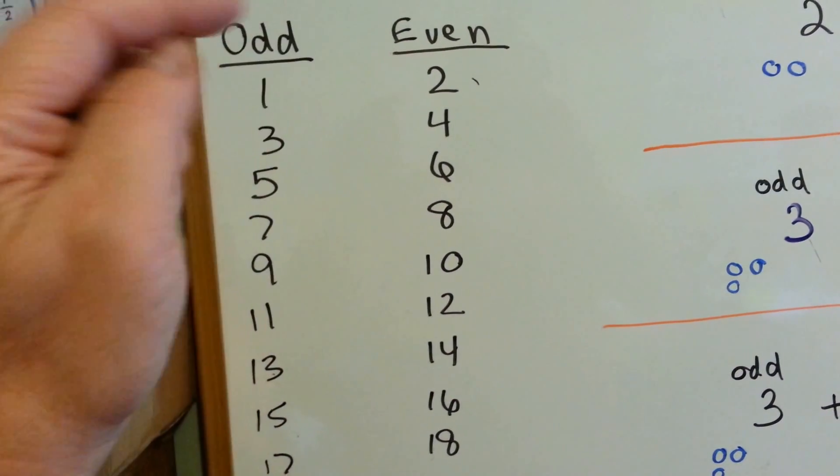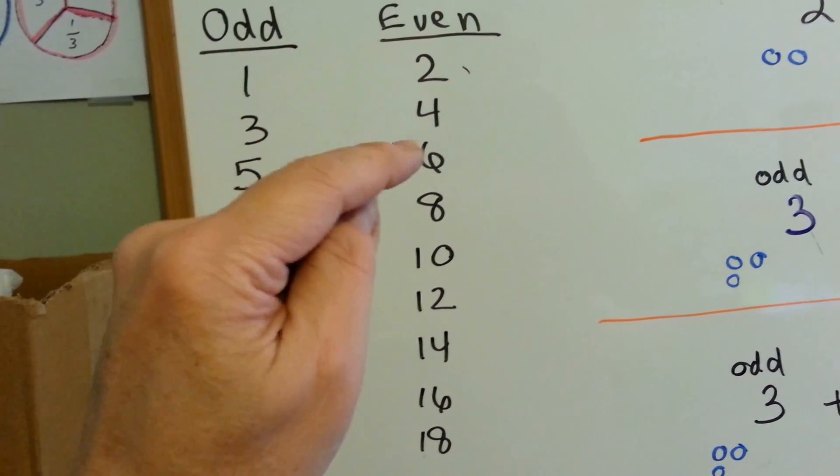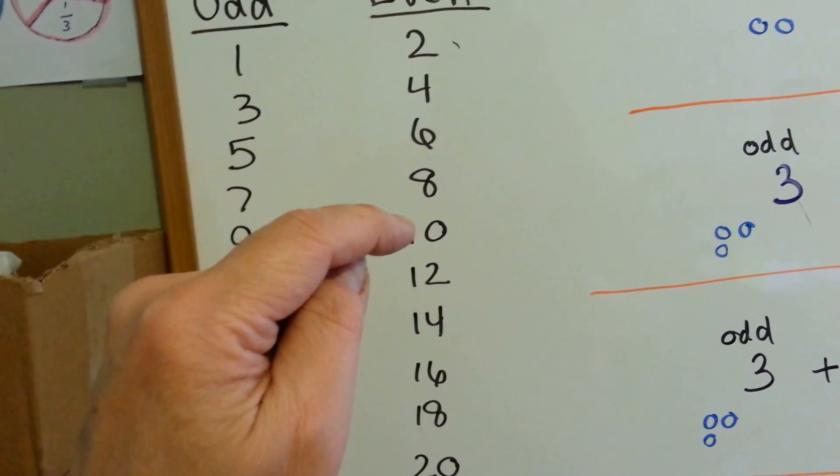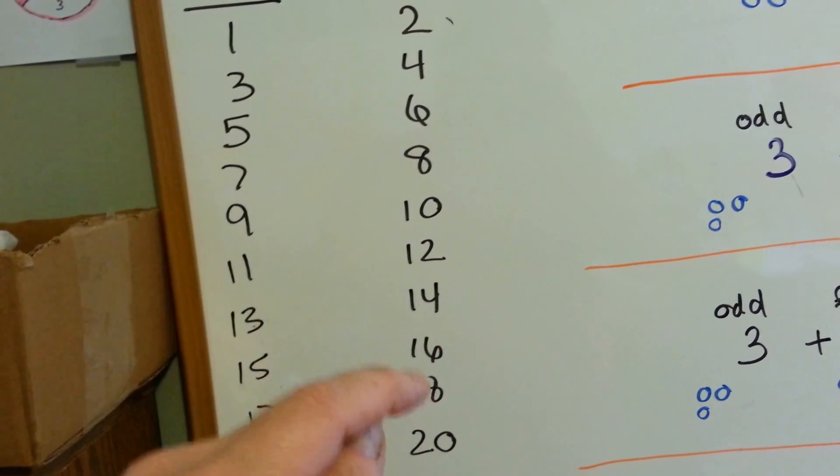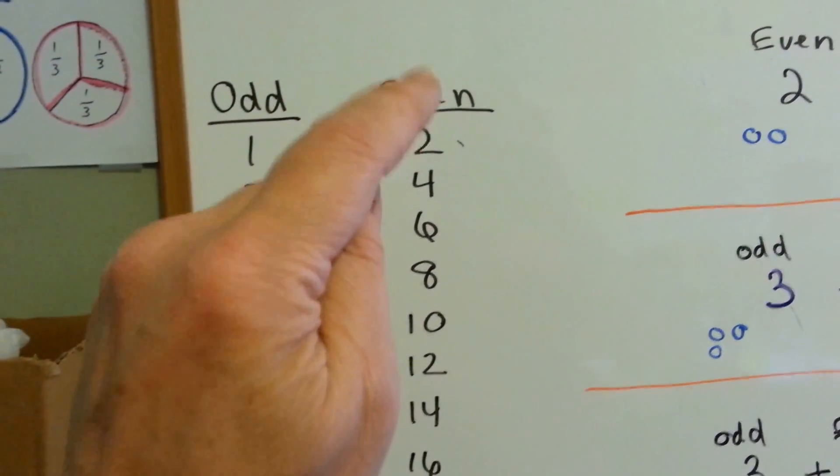If a number ends in a zero, which should have been up here, I'm sorry, 2, 4, 6, 8. See the zero? 0, 2, 4, 6, 8. If any number ends with a 0, 2, 4, 6, or 8, it's even.